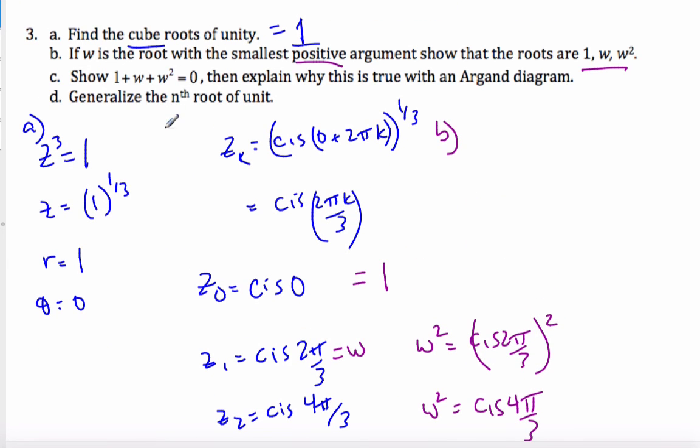And then finally, generalize the nth root of unity. Well, I'm going to look at this statement here. This zk is for the cubed root of unity, because it was cubed, and I applied the cube to cis.